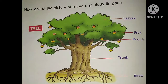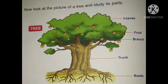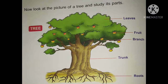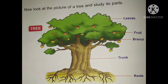Now here is a picture of a tree. Let us see the different parts of a tree, starting from the bottom. The first part is roots — jadh in Hindi. Roots are what go underground, connect the plant to the soil, and absorb water and minerals from the soil for the plant. That is called roots.